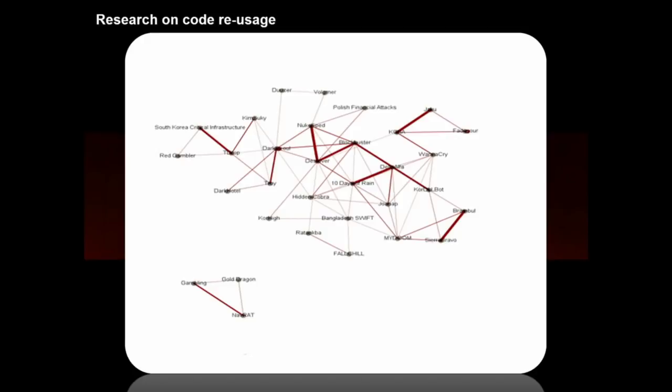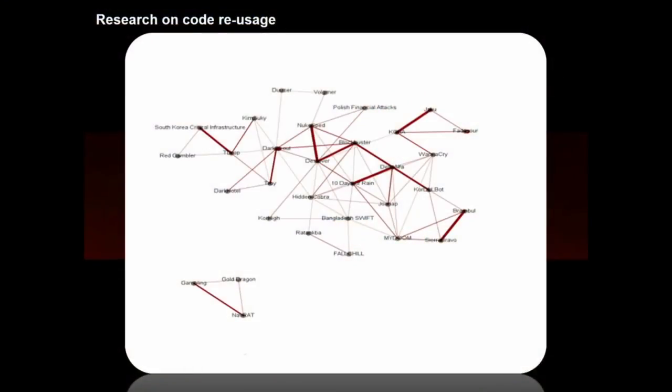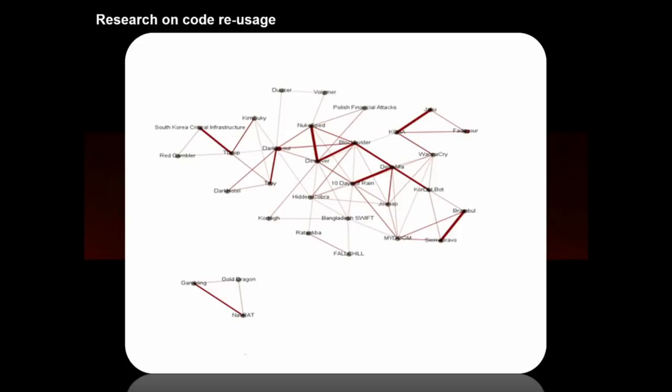We found traces in WannaCry code going back to 2009 — they reused code from 2009 in their 2017 WannaCry malware. Interestingly, it turns out North Korea and Iran both like to use Code Project for taking some code, so there's actually a small code overlap from a library you can download right off Code Project — an interesting fact.